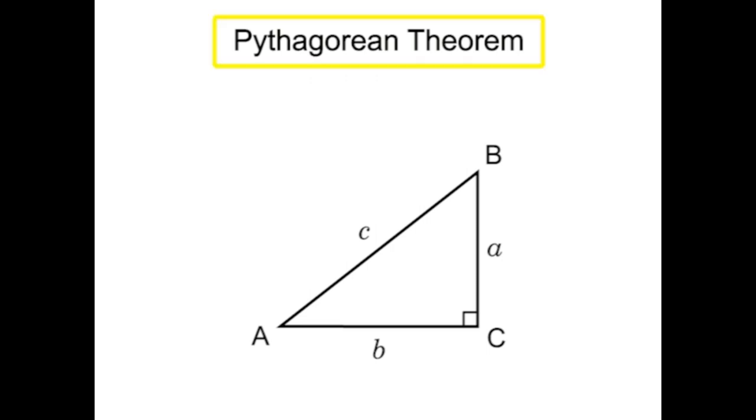The Pythagorean Theorem is an equation that describes the relationship between the three sides of a right triangle. The theorem states that the sum of the square of the two leg sides is equal to the square of the hypotenuse. The legs are the sides next to the right angle, and the hypotenuse is the side opposite the right angle.